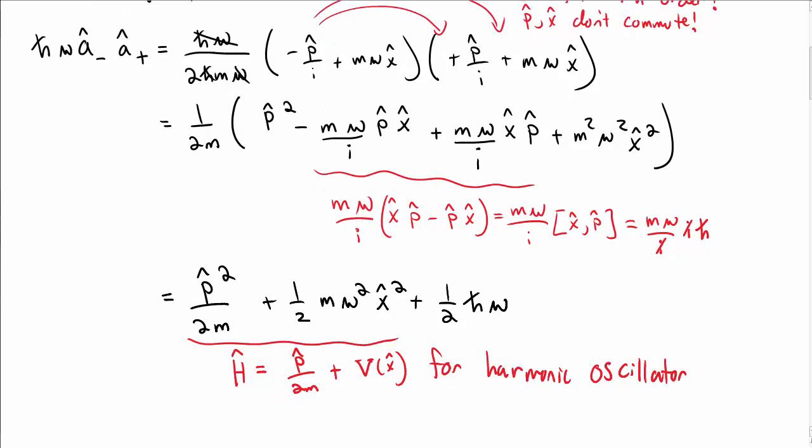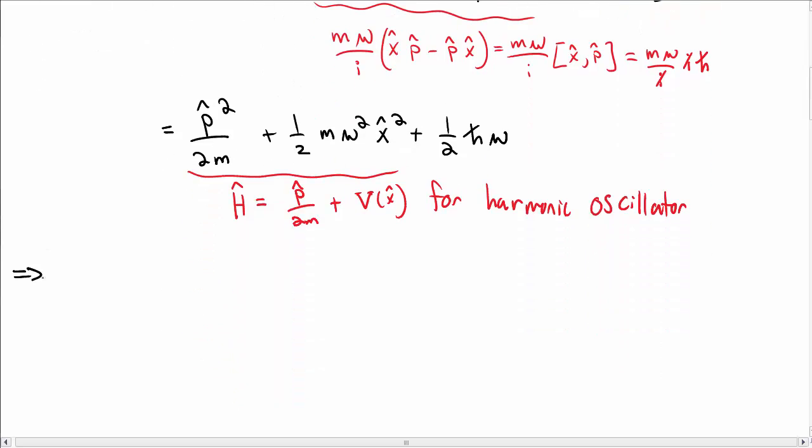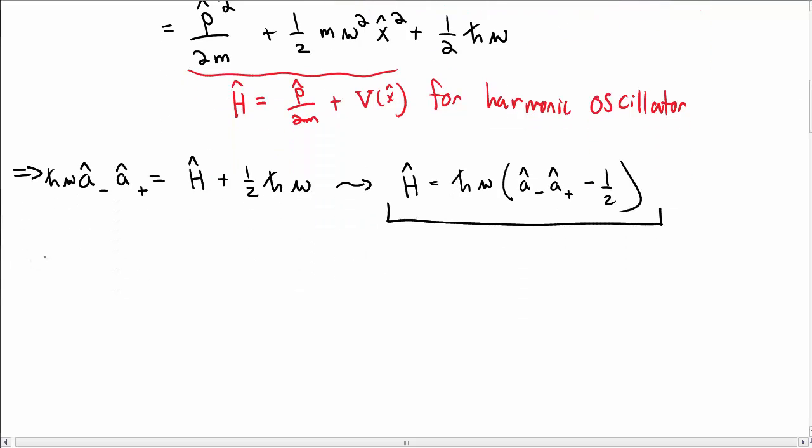And that is in fact the nice property of these raising and lowering operators. So in particular, we say that ħω â₋â₊ is equal to Ĥ plus ½ħω. You could rearrange this so that Ĥ, the Hamiltonian, is ħω â₋â₊ minus ½. Remember, this is only true for the harmonic oscillator - doesn't work for any other potential.